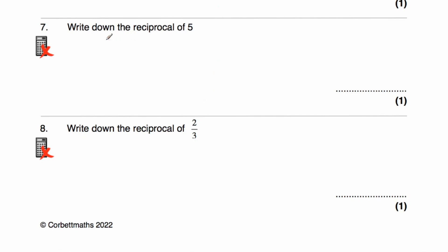Question 7: what is the reciprocal of 5? 5 is 5 over 1, and if we flip that over, that's going to be 1 fifth. So the answer is 1 fifth. Just checking: 5 times a fifth is equal to a whole.